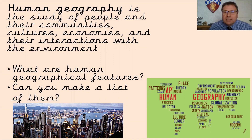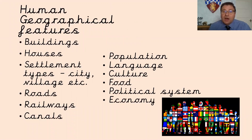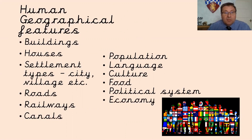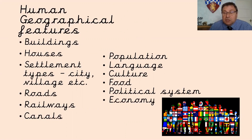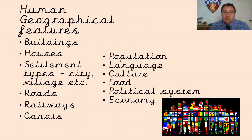Welcome back. I hope you've got your list — here is the list I did earlier. Maybe compare the two and see how many you got, and if you got any extras I'd love to hear from you. The list includes: buildings, houses, settlements, roads, railways, canals, population (the number of people in a given area), language, culture — like what people do and how they do it, food, political systems, and the economy — how people make money and how they live. That's really what human geography is all about and that's what we're looking at today.